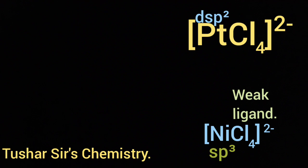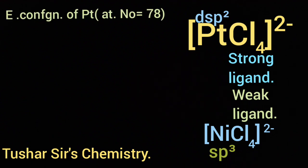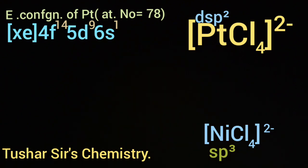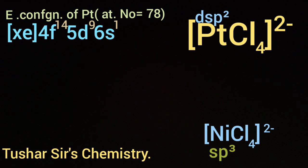Whereas in case of PtCl₄²⁻, Pt is a heavier d-block element and it has a 5d subshell. Cl⁻ in PtCl₄²⁻ is a strong ligand. The strength of Cl⁻ increases because of poor shielding of 4f and 5d and increased nuclear charge of Pt. This makes Cl⁻ a strong ligand.